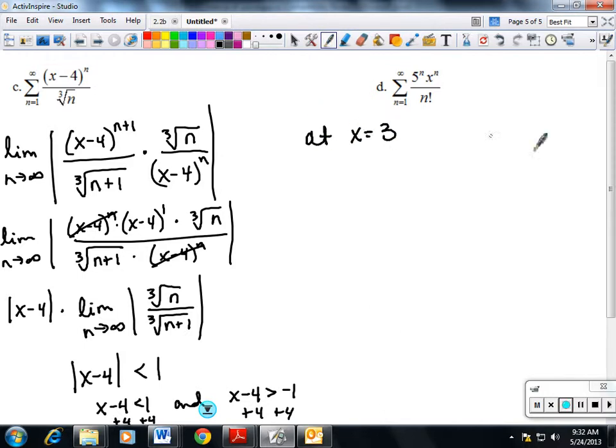At x equals 3, I've got the series (3-4)^n over the cube root of n. That's (-1)^n over the cube root of n. That's an alternating series. Limit goes to 0, it's going to converge.